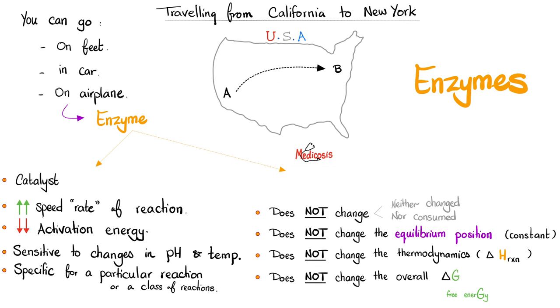When you join protein with something else, a prosthetic group, you call this a conjugated protein. Enzymes are like airplanes. They help you go to your destination faster. They increase the speed or the rate of the reaction. They lower the activation energy. Of course they depend on pH and temperature. They are specific for a particular reaction or a class of reactions, as you will discover today.